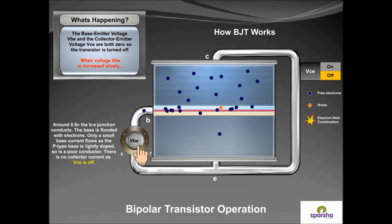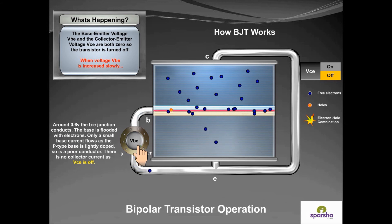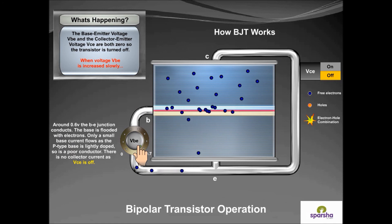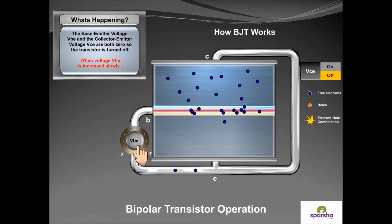When VBE crosses 0.6 volts, the BE junction conducts. The base is flooded with electrons. Only a small base current flows, as the P-type base is lightly doped, so it is a poor conductor.